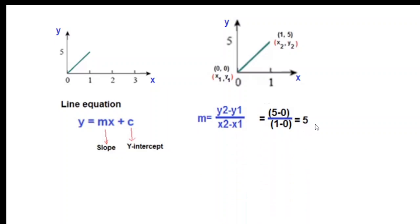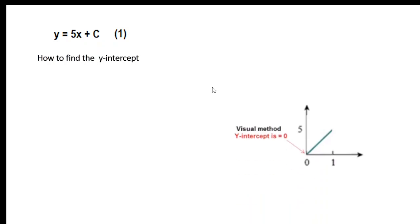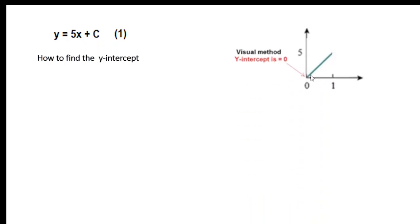Putting the values, we get the slope equal to 5, so our equation will be y = 5x + c. Now we need to find c, which is called the y-intercept. The concept is that wherever this line touches the y-axis — remember this is the y-axis and this is the x-axis — the value of y at that point is called the y-intercept.